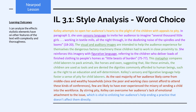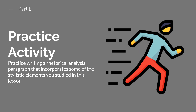As you can see, the style analysis was incorporated into the text evidence and into the explanation of effects as well. That is how you work style analysis into your rhetorical analysis — it makes your analysis more specific because you can give specific names to some of the things the writer is doing. That is it for this lesson. Go ahead and move on now to Part E, the final part of the practice activity, where you will practice writing a rhetorical analysis paragraph that incorporates some of the stylistic elements you studied in this lesson.